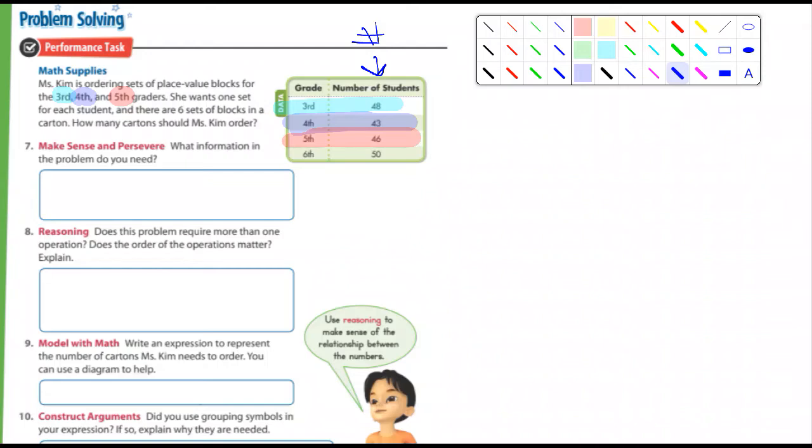So it says there's six blocks in a carton. Now think about that. If there's six blocks in a carton, how many students would that provide for? Yeah, exactly. So that would be six students.